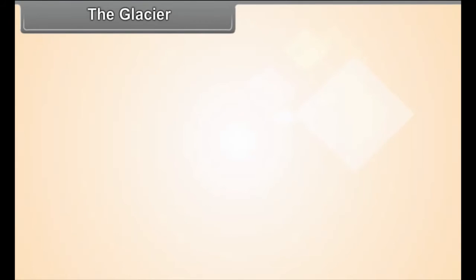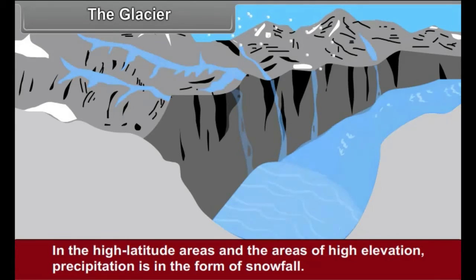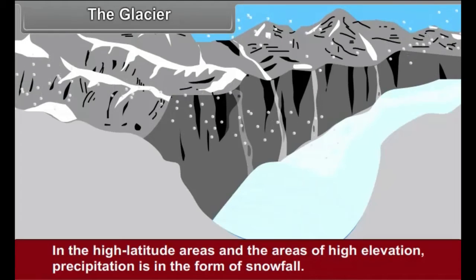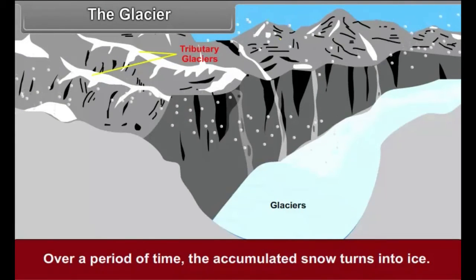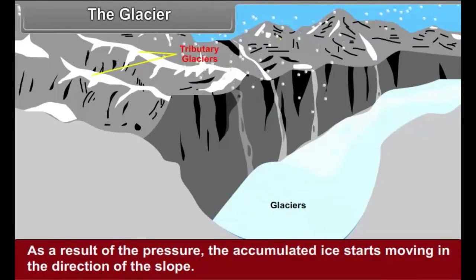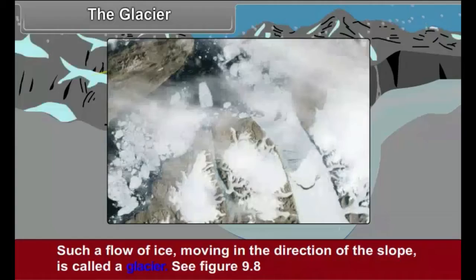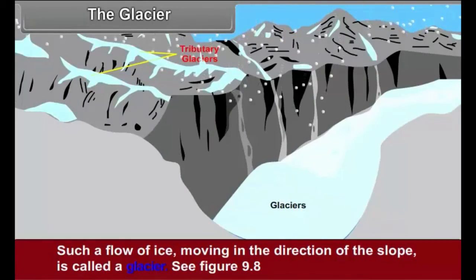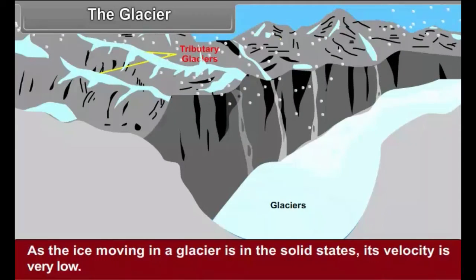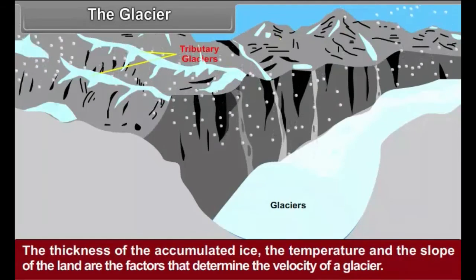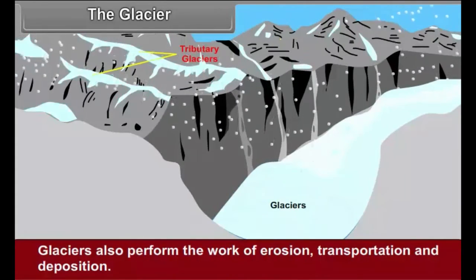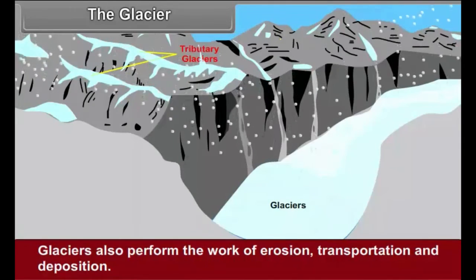The Glacier: In the high latitude areas and the areas of high elevation, precipitation is in the form of snowfall. Over a period of time, the accumulated snow turns into ice. As a result of pressure, the accumulated ice starts moving in the direction of the slope. Such a flow of ice moving in the direction of the slope is called a glacier. See figure 9.8. As the ice moving in a glacier is in the solid state, its velocity is very low. The thickness of the accumulated ice, the temperature and the slope of the land are the factors that determine the velocity of a glacier. Glaciers also perform the work of erosion, transportation and deposition.